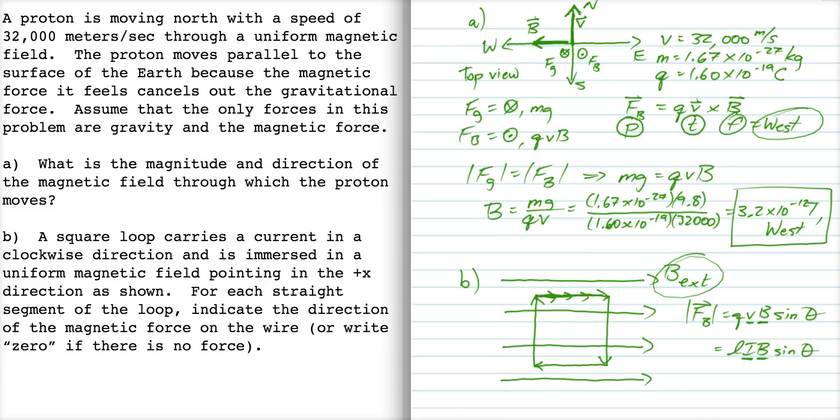For this top wire up here, the current I is in the same direction as the field, so theta is equal to 0, and the magnetic force is equal to 0. For this bottom wire, the current is 180 degrees away from the magnetic field, and so again, the magnetic force is equal to 0.